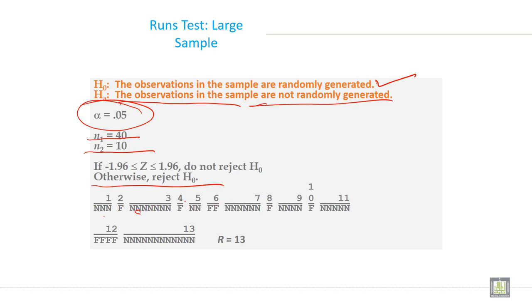So N1 is equal to 40, and N2 is equal to 10. If minus 1.96 is less than or equal to Z, less than or equal to 1.96, do not reject null hypothesis, otherwise reject it.